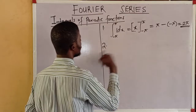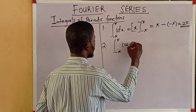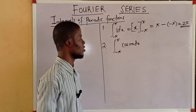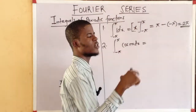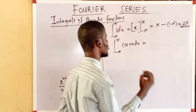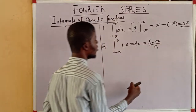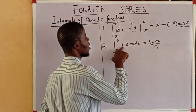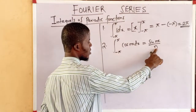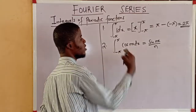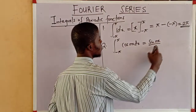The second integral we are considering is the integral from negative pi to pi of cos(nx) dx. The integral of the cosine function is the sine function. So we have sine(nx) all over n. We take the integral and divide by the derivative of nx, which is n.